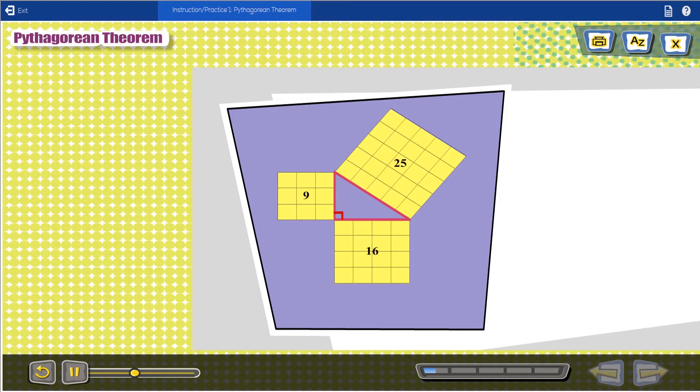This particular concept was a little tricky for my son at first. The activity breaks down the concept in a way that was easy for my son to understand. The area of the largest square. In this example, 9 plus 16 equals 25.